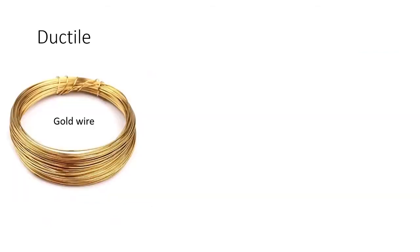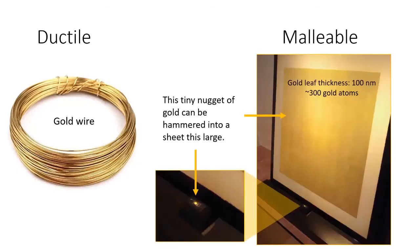Metals are well known for being ductile, which is the ability to form flexible wires. Metals are also malleable, meaning they can be bent to almost any shape. Gold is the most malleable metal and can be flattened into a sheet just 100 nanometers thick, which is called gold leaf.